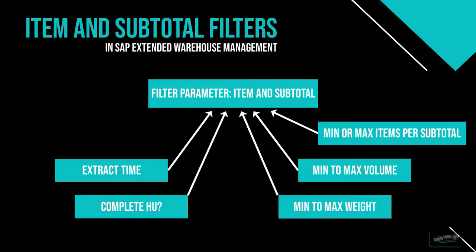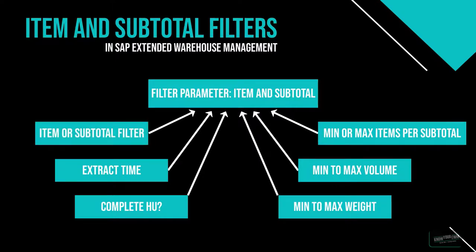Extract and process time: these options allow us to set a range for the processing time of the warehouse order. If we set these options, the EWM system will prevent creating a warehouse order that is going to take too much time to process. And of course we need to set the attribute if the customized filter is to be used on item or on subtotal level. That is it on what attributes we can use for creating filters either on item or on subtotal level.